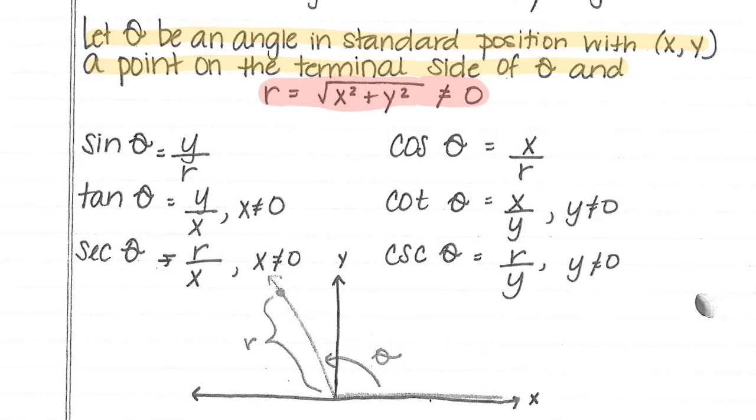The things we already know: the sine is y over r, the cosine is x over r, tan is y over x where x cannot equal zero or it would be undefined, cotan is x over y flipped, sec is r over x, and cosecant is r over y. Remember, those denominators cannot equal zero.